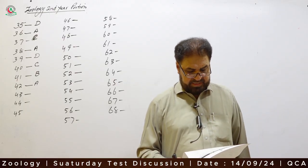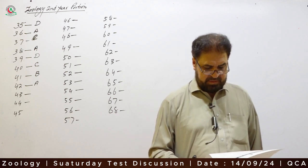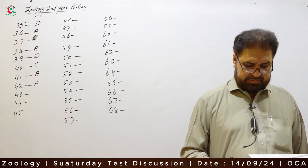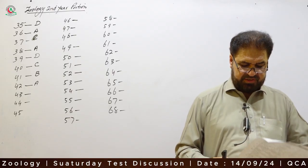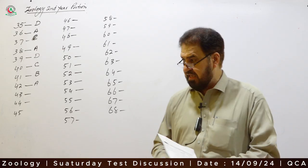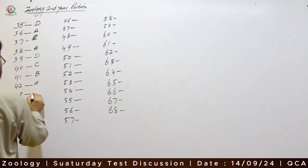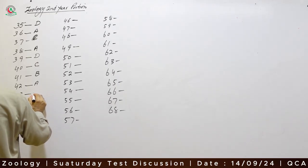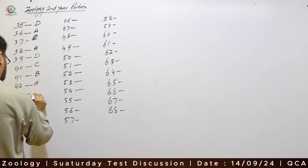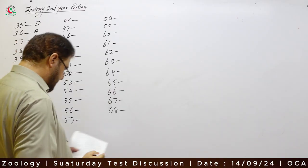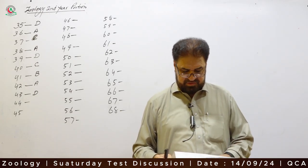Question 43: Joints between the bones of wrist and ankle are Option D — cartilaginous joints. Cartilaginous joints are slightly movable joints; they allow limited movement. Wrist and ankle joints are cartilaginous joints. Option D is correct.